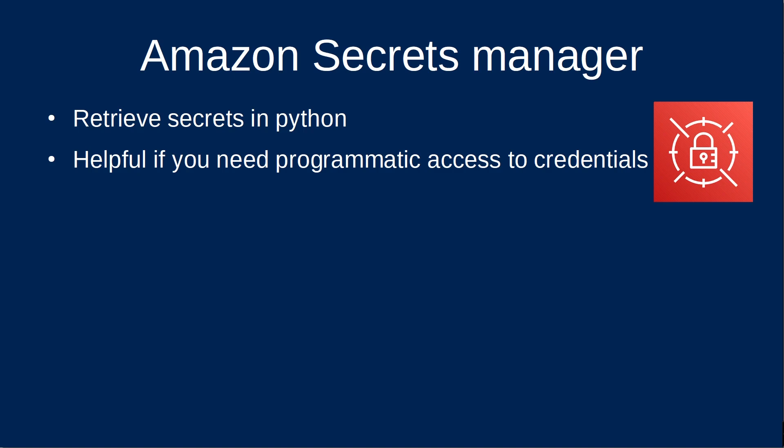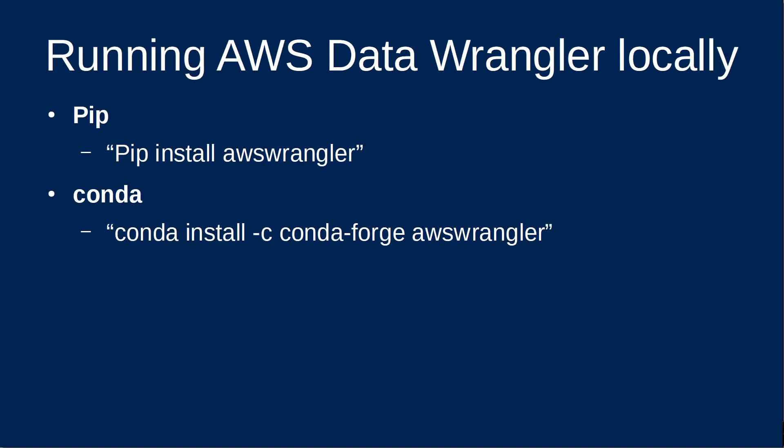Is it easy to install and get up and running? AWS Data Wrangler can be installed easily on a local machine with Python 3, just like any other Python library, through pip install awswrangler. It can also be installed through Conda using conda install -c conda-forge awswrangler.